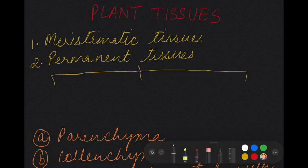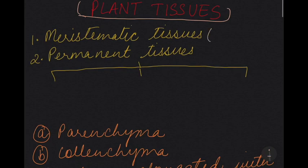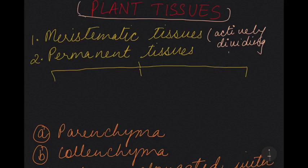Hello children, I hope you're having a great day and staying safe at home. Today I'm here to continue with the tissue chapter. We were discussing plant tissues, and we had already discussed meristematic tissues — remember, they are actively dividing cells found on the growing tips of plants, in the tips of roots and stems. Then we started with permanent tissues, and there were three types: the first one was protective.